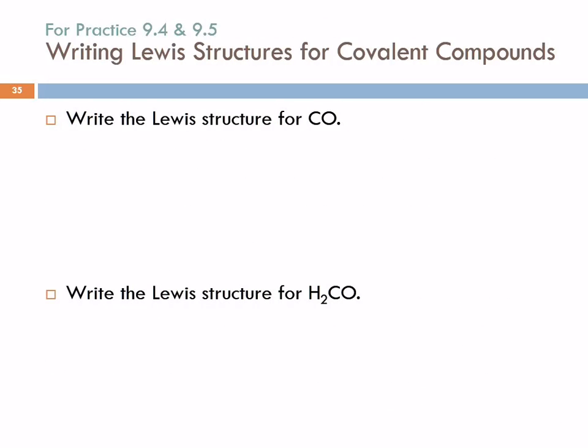So let's do a couple of these. Write the Lewis structure for carbon monoxide. This is a diatomic molecule, so writing the skeleton structure is pretty simple. There's only two atoms, they have to be connected to each other. I'm going to write the carbon and the oxygen next to each other. How many valence electrons does carbon have? Four. It's in group four. How many does oxygen have? Six. So we've got one of each, and we have a total of ten electrons. That means we can put ten dots around this.